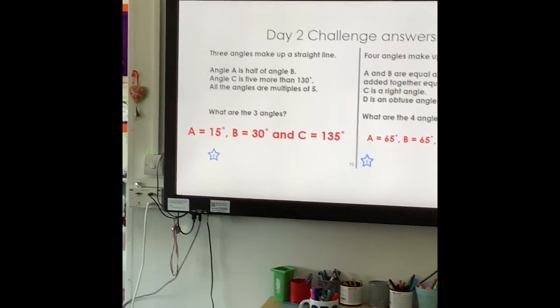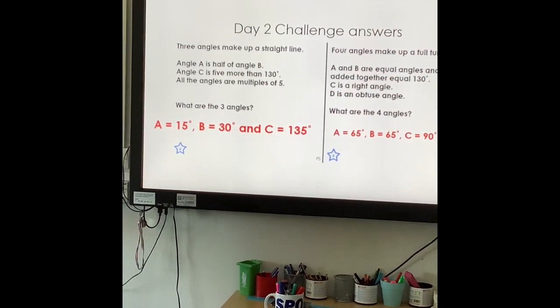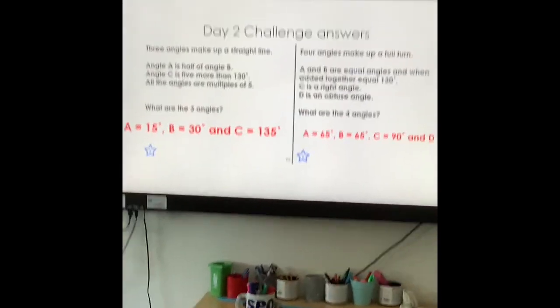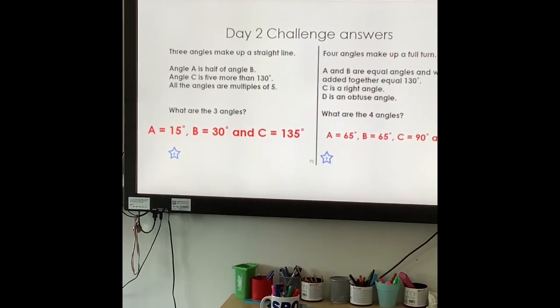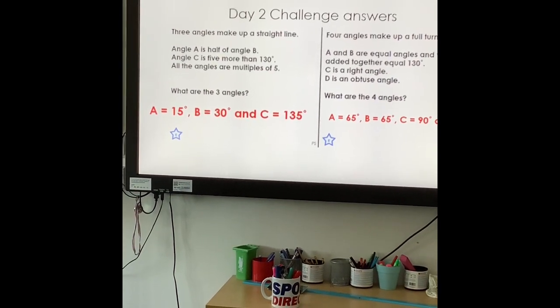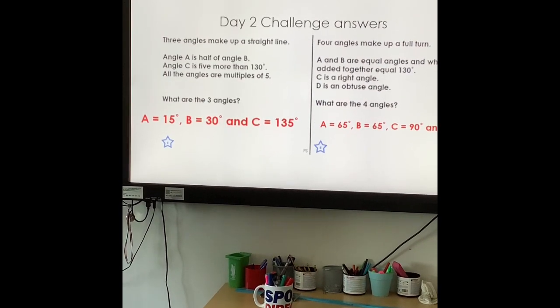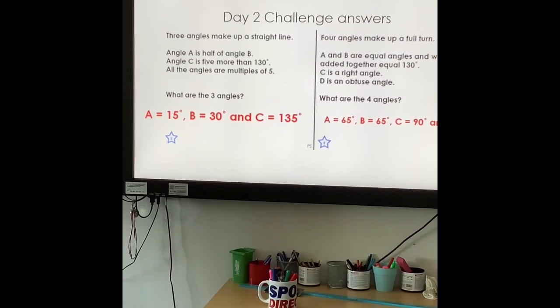So three angles make up a straight line. Hopefully you know that a straight line is 180 degrees. That was one of the things in the very first video. Angle A is half of angle B. Angle C is five more than 130 and they're all multiples of five.